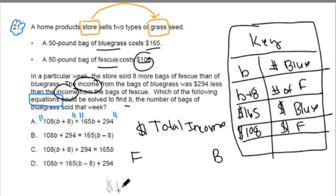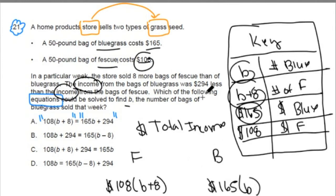Now we can figure out the total money made from fescue. We know that fescue costs $108 per bag from our key. So we could do $108 times the number of bags of fescue. That's the B plus 8. And this right here, the total cost per bag times the number of bags of fescue, equals the total income of fescue. And we could figure out bluegrass too. It's the $165 per bag times the number of bags, which is B. This gets us total income. And we're told that it's $294 less than fescue. So if we wanted to make these two expressions equal to each other, we'd have to go to the bluegrass. And if it's less by 294, we'd have to add 294.